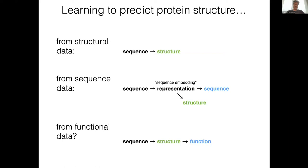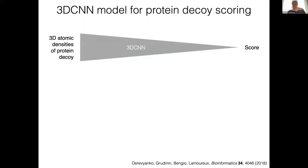The question we're asking is: could we also use functional data as a source of information to get better at predicting structure? It should be the case, because we know that structure determines function. If you can back propagate some functional data and find what's the underlying molecular structure, it should actually help in training.